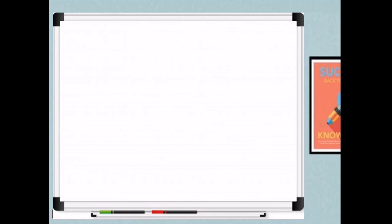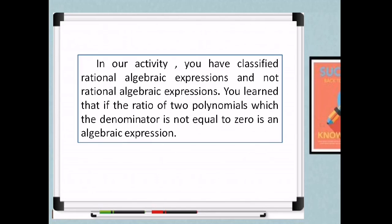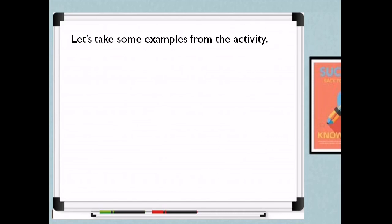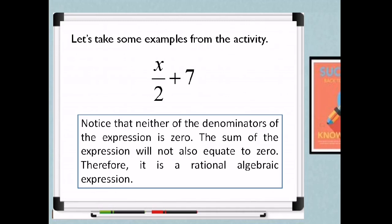You were able to classify expressions as rational algebraic expressions or not. In our activity, you learned that if the ratio of two polynomials has a denominator not equal to zero, that is a rational algebraic expression. Let's take some examples. Consider x over 2 plus 7: neither denominator is zero because the denominator of 7 is 1, so when added, the sum will not equate to zero. Therefore, it is a rational algebraic expression.